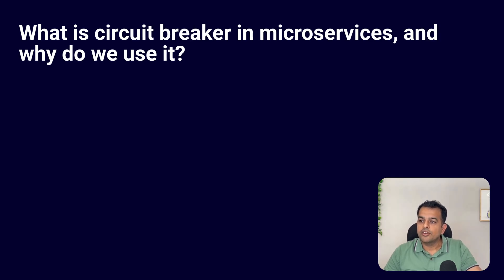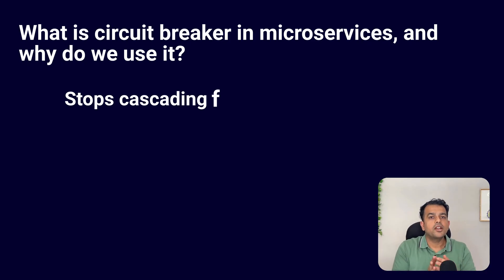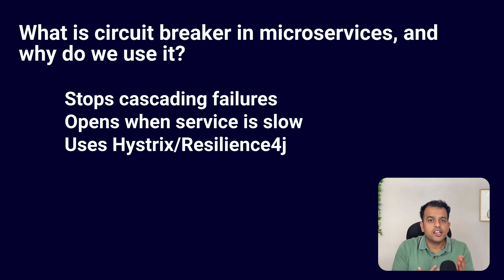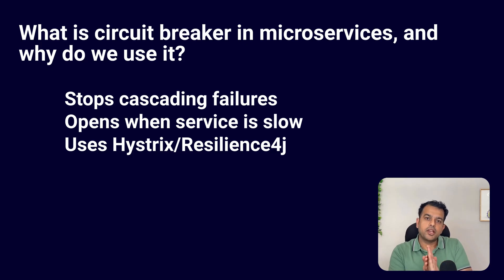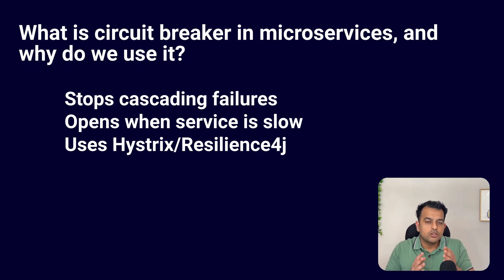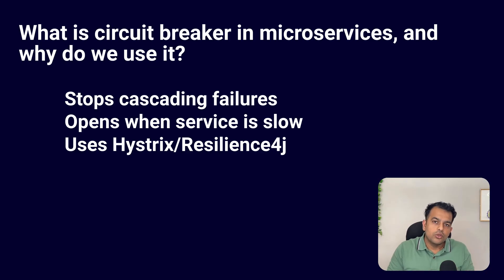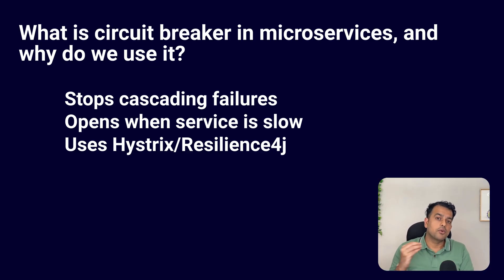The interviewer moved to a microservice reliability question: what is a circuit breaker in microservices and why do we use it? A circuit breaker helps prevent cascading failures — where one service failing causes another to fail, and so on. If one service is slow or down, the circuit opens and stops calls to that service, avoiding overloading the failing application and protecting the overall system. Tools like Resilience4J or Hystrix are commonly used. Circuit breaker improves stability and user experience during failures.